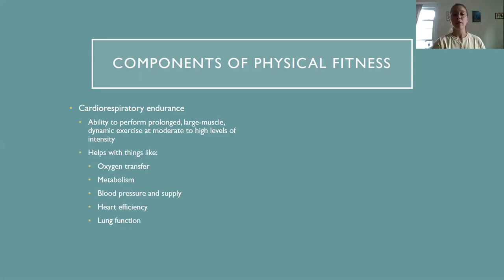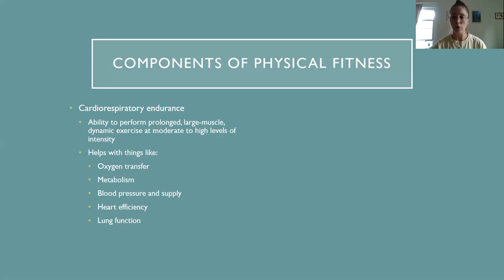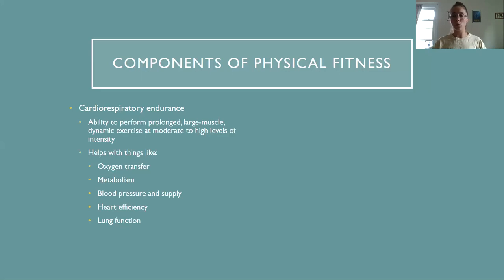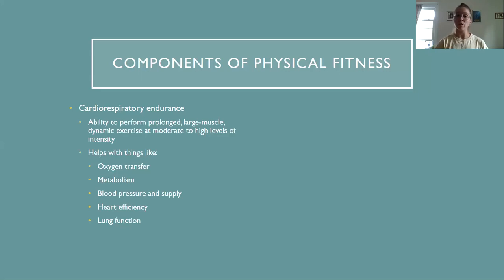Improving cardiorespiratory endurance strengthens the heart muscle so we can pump out more blood per stroke — referred to as stroke volume. The more blood we pump out per stroke, the more efficiently we deliver oxygen to fuel daily activities and exercise. The lungs also benefit: as we breathe hard during cardiorespiratory activity, our lungs get stronger and more effective at gas exchange — taking in oxygen and expelling the carbon dioxide that is the byproduct of cellular metabolism.